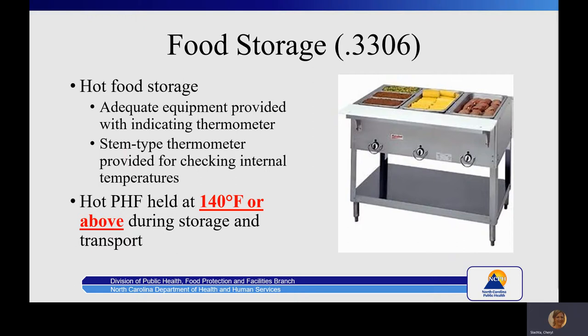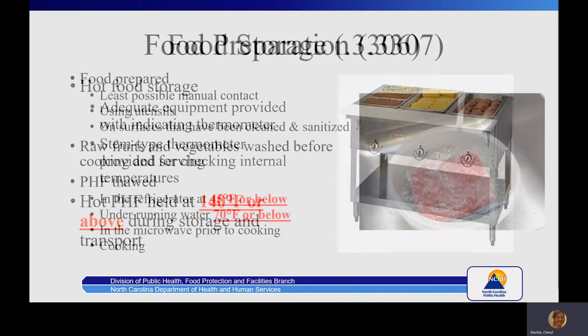Each hot food unit shall be provided with a numerically scaled indicating thermometer located to measure the air temperature in the coolest part of the unit and be easily readable. Recording thermometers may be used in lieu of indicating thermometers. Where it is impractical to install thermometers on equipment such as steam tables, steam kettles, heat lamps, or insulated food transport carriers, a metal stem-type numerically scaled product thermometer shall be available and used to check internal temperatures — violation of number 6. The internal temperature of foods requiring hot storage shall be 140 degrees or above, and potentially hazardous food transported hot shall also be held at 140 or above — violation of number 2.